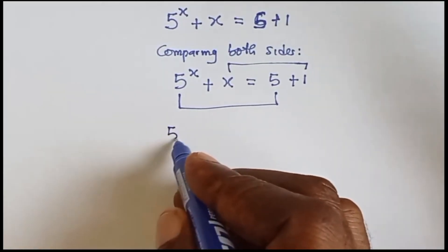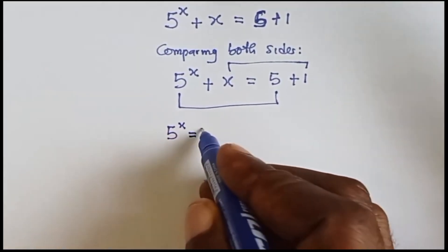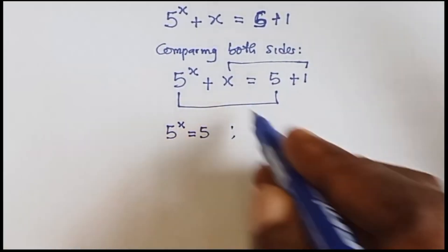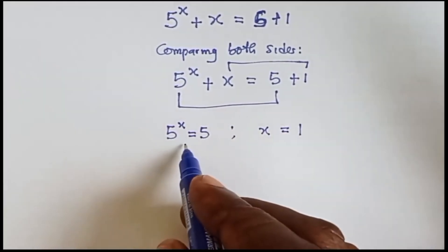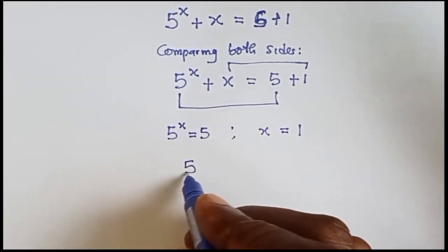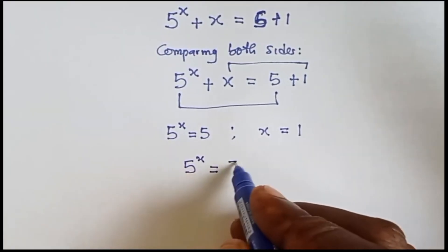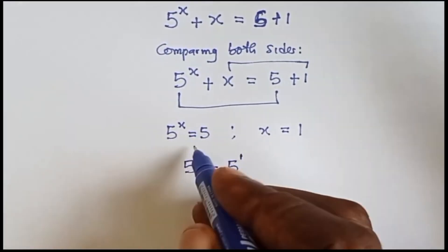Now we have 5 raised to the power x equals 5, and then we have x equals 1. Let's solve this. 5 raised to the power x equals 5, which is the same thing as 5 raised to the power 1.